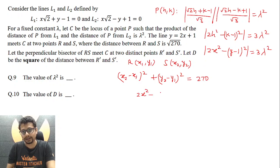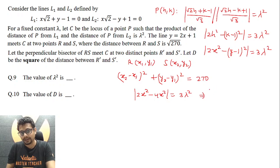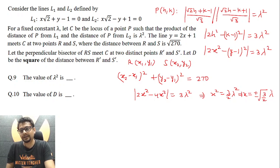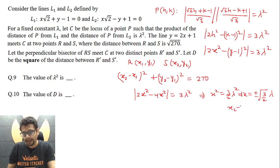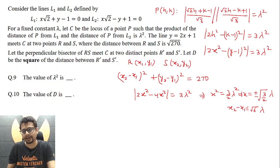Since we're looking for intersection points between curve C and the line y = 2x + 1, let's solve them simultaneously. Substituting y = 2x + 1 into the curve: 2x² − (2x + 1 − 1)² = 2x² − (2x)² = 2x² − 4x² = −2x², so |−2x²|... it becomes 4x² = 3λ². Thus x² = 3λ²/2, or x = ±√(3/2) · λ. It doesn't matter whether λ is positive or negative since we ultimately want λ².